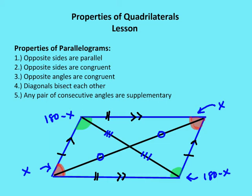Well, that's by definition. A parallelogram is a quadrilateral where opposite sides are going to be parallel, so by definition number one is true. Number two: in a parallelogram, opposite sides are congruent.